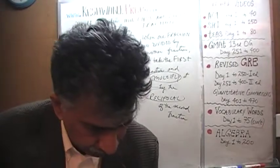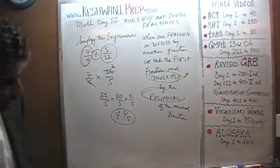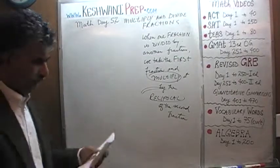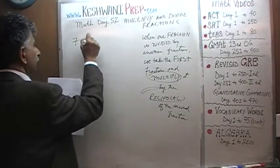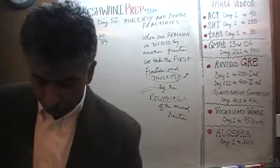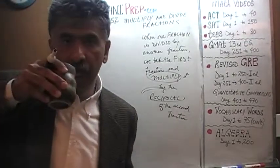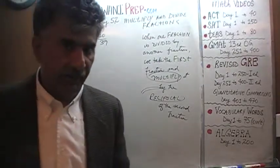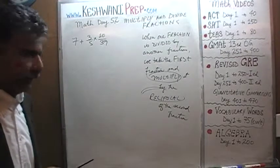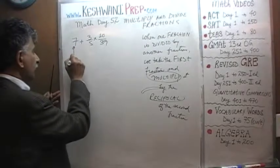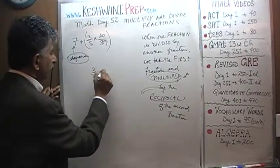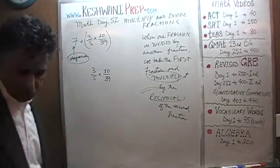Let's do one more. The next one asks us to work out 7 plus 3/5 times 10/39. It's not a bad idea for you to pause the video and try this problem on your own — you will learn more that way. The key here is to not worry about the 7 until the very end; let's keep the 7 in abeyance.